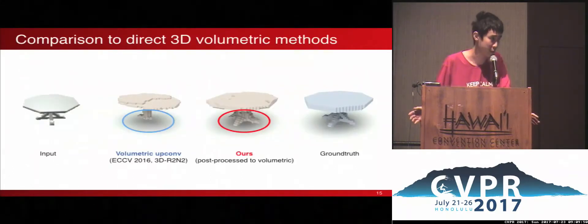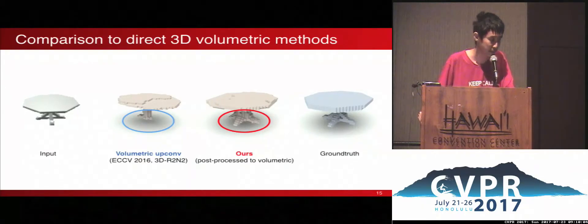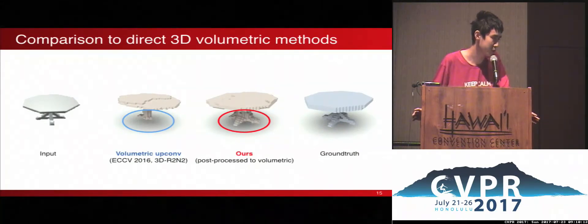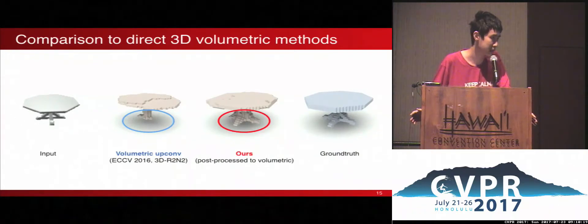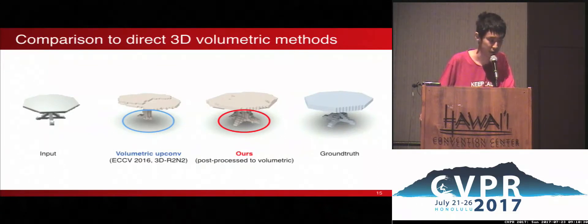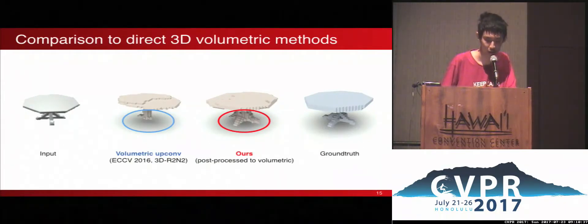In the majority of previous methods, they use the volumetric representation of the object, which classifies whether each voxel belongs to the object. These methods often miss thin structures, like the legs of a table. Why? Because from the input image, the neural network doesn't know the exact location of such thin legs. When you compute the loss, its best strategy is to not assign any voxels to the legs at all. In contrast, in our method this problem is eliminated, because a small change in the position of the leg only incurs a small change in the XYZ coordinates. So our reconstructions are in general more complete compared to previous work.